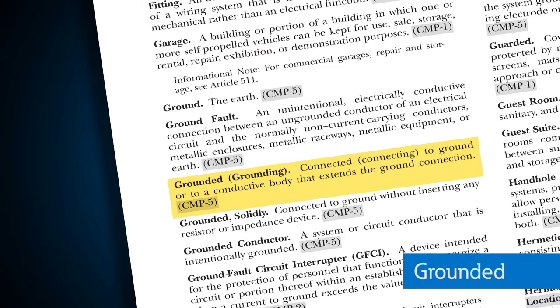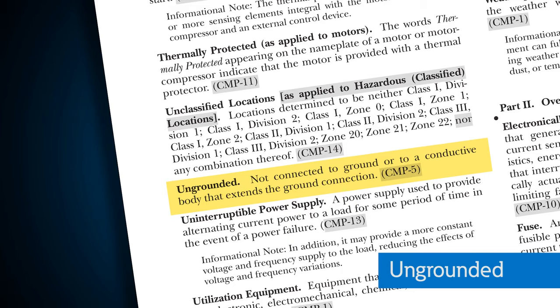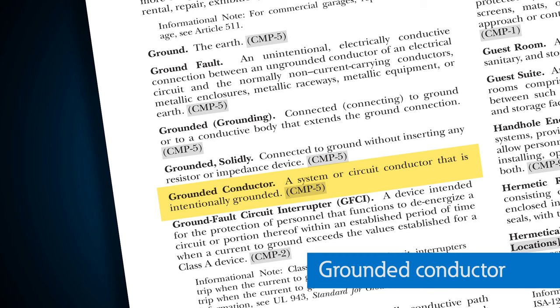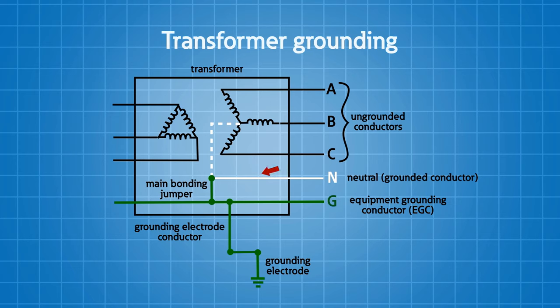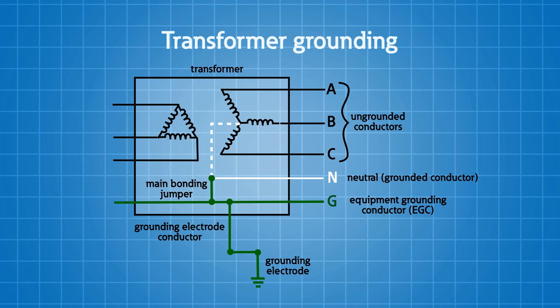'Grounded' means we are connected to the earth or to some body that extends that earth connection. 'Ungrounded' is just the opposite — not connected to ground or to a conductive body that extends that ground connection. The grounded conductor is the system or circuit conductor that is intentionally connected to the earth at one point; we usually refer to this as the neutral. Its counterpart, the ungrounded conductor, is a circuit conductor that is not intentionally connected to the earth — usually your phase conductors.